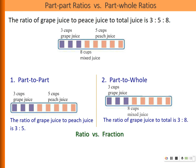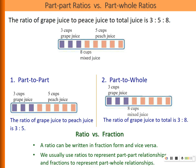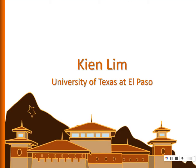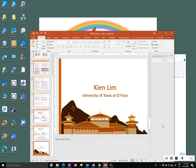Let me differentiate between ratio and fraction. Usually ratio and fractions are used interchangeably because we can always write the ratio three to five as three over five. The ratio can be written as a fraction and the fraction can be written as a ratio. But usually we use ratio to represent a part-part relationship and we use a fraction to represent a part-whole relationship. Thank you.